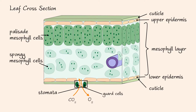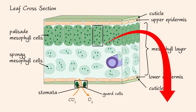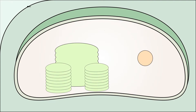The palisade cells are vertically elongated and have the highest density of chloroplasts. Thus, palisade cells have the highest rate of photosynthesis of all cells in the leaf. Spongy mesophyll cells are irregularly shaped, creating multiple air pockets which facilitate gas exchange. Now let's focus our attention to a single palisade cell. The plasma membrane serves as a barrier between the extracellular environment and the cytoplasm. Because chloroplasts are the site of photosynthesis, let's examine the anatomy of a chloroplast.